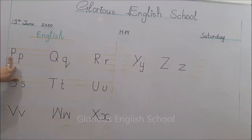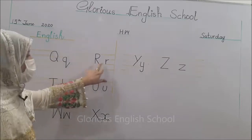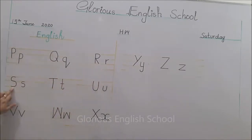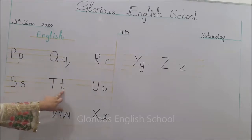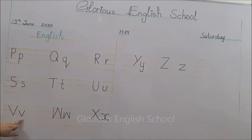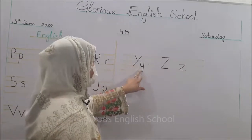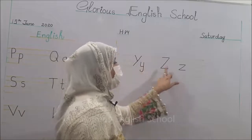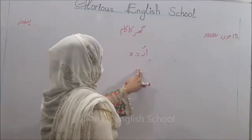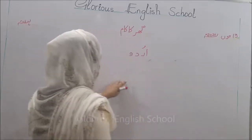Read it: Capital P and small p, capital Q small q, capital R small r, capital S small s, capital T small t, capital U small u, capital V small v, capital W small w, capital X small x, capital Y small y, capital Z small z। अगला subject है Urdu।